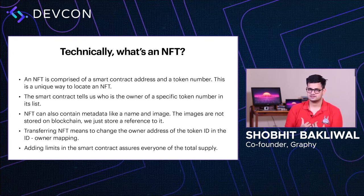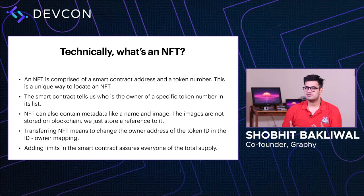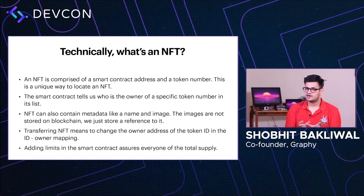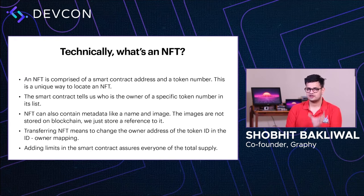The smart contract responds with my address, and that is how I prove my ownership of a specific NFT. NFTs can also contain metadata like name, description, and an image URL, along with attributes and properties. These are the three main things an NFT contains. The image URL in the metadata is what people generally show off on social media. The image is not stored on the blockchain — only the reference to that image is stored. We store the URL of the metadata, and in that metadata we have a URL to the image.